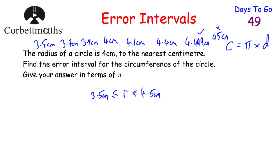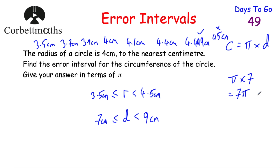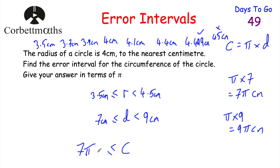The diameter is double the radius, so the diameter is between 7 cm and 9 cm: 7 ≤ d < 9 centimetres. Since circumference = π × diameter, if diameter = 7 then circumference = 7π centimetres, and if diameter = 9 then circumference = 9π centimetres. So the error interval for the circumference is: 7π ≤ C < 9π centimetres. Well done if you got that.